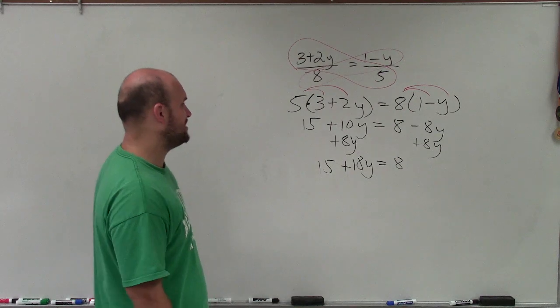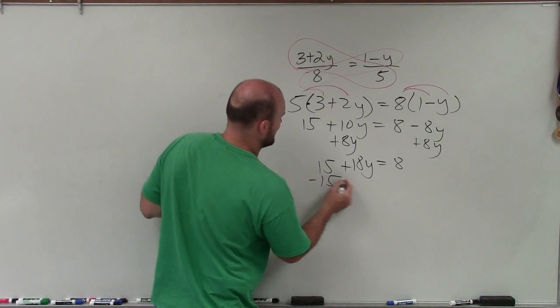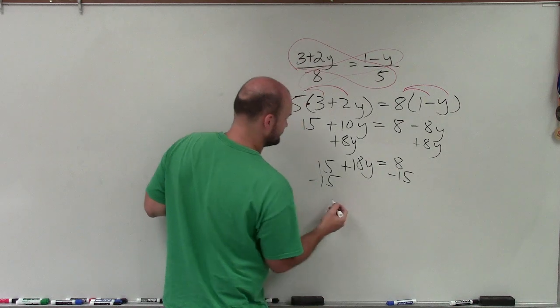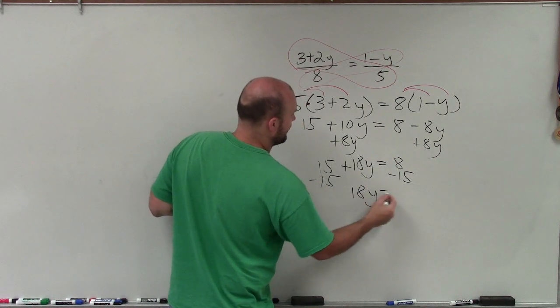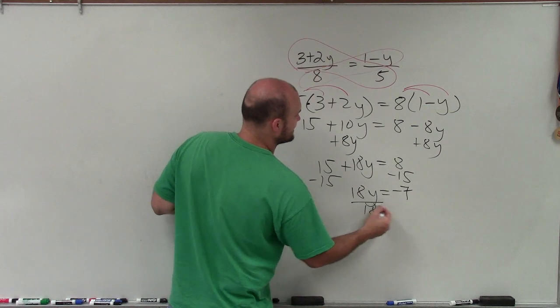Then to go ahead and solve from there, I'll just get the y by itself. So I'll subtract the 15. So I have 8y is equal to negative 7. Divide by 18.